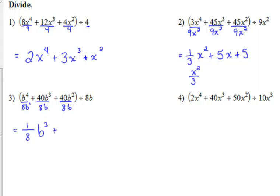well, b has an understood exponent of 1, so 4 minus 1 is 3, so we've got 1 eighth b cubed. 40 divided by 8 is 5. b cubed over b is b squared. 40 divided by 8 is still 5, and b squared over b is b.